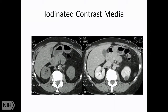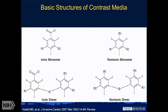Iodinated contrast media is fundamental to CT. Without it, scans would be useful but not very useful — for instance, a mass coming out of the kidney might be recognized but after intravenous contrast you can see it's a simple renal cyst of no consequence. Without that distinction, there would be a lot of uncertainty and you might even try to biopsy the lesion.